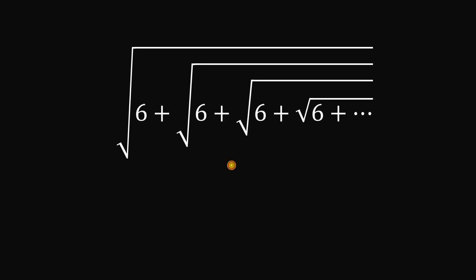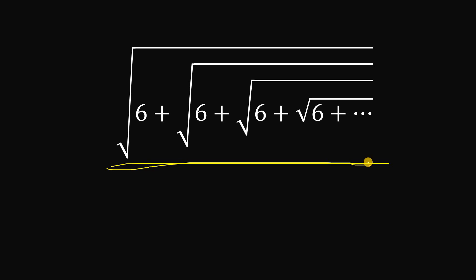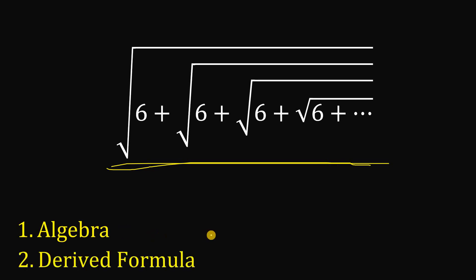So, given this expression, our goal is to simplify it. To do that, we will use two different methods. The first one is using algebra, and the second one is by using the derived formula involving square roots, or the radical sign.